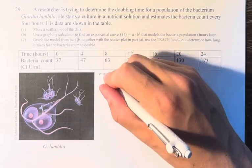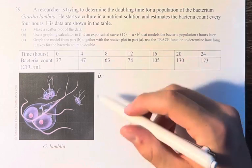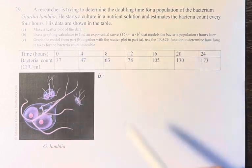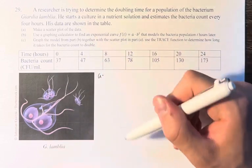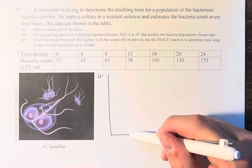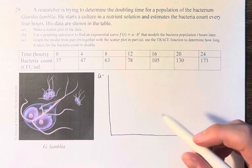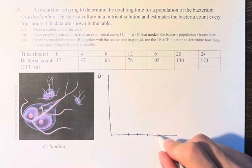So first, in part a, we're asked to make a scatterplot of the data. We just have to graph all of these points. On the x-axis we're going from 0 to 24, and on the y-axis we're going from 37 to 173. So that's going to look something like this, going from 4, 8, 12, 16, 20, 24.